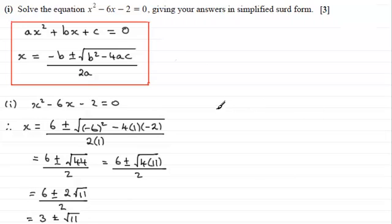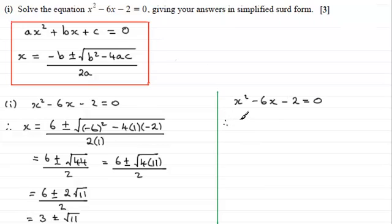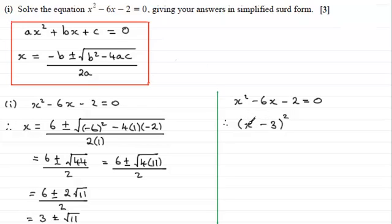The alternative way is to do it by completing the square. Taking x squared minus 6x minus 2 equals zero, we put a curved bracket with a square, we put x at the front, and we halve the coefficient of x. The coefficient of x is minus 6, so halving that gives minus 3. When we square this out, we get x squared, then minus 3x minus another 3x which is minus 6x, but then minus 3 times minus 3 which is plus 9.